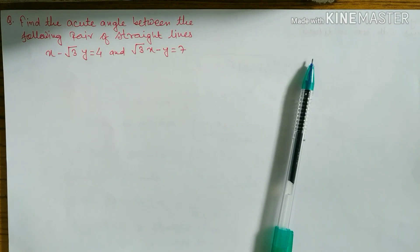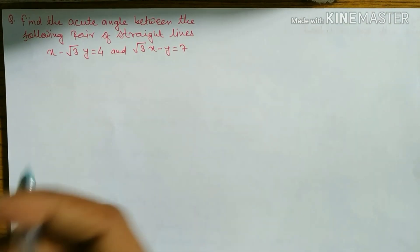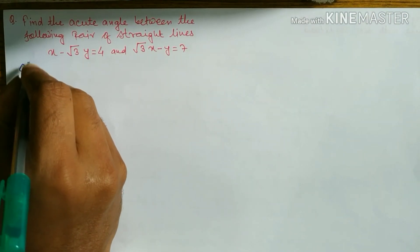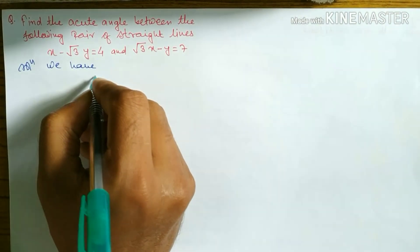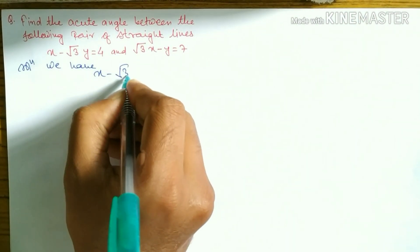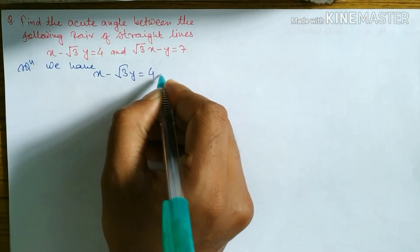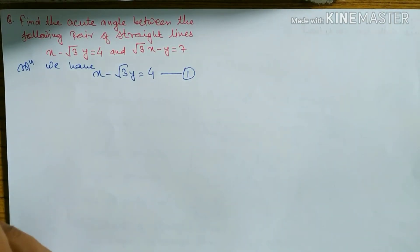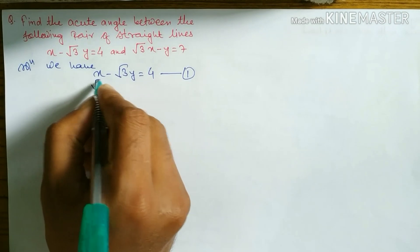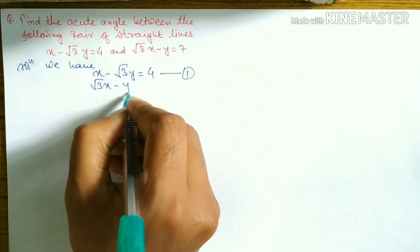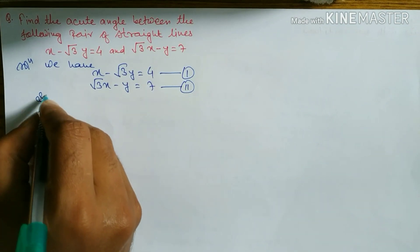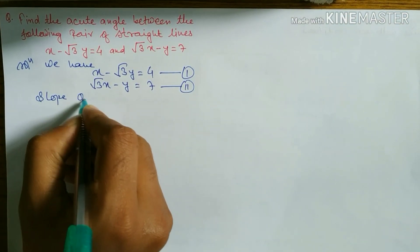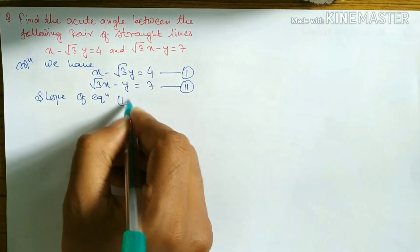We have two equations given. Equation 1 is: x minus root 3 times y equals 4. Equation 2 is: root 3 times x minus y equals 7. Now we have to find the slope of each equation.